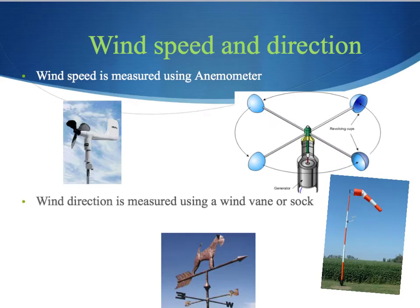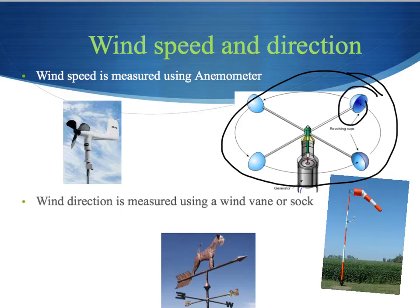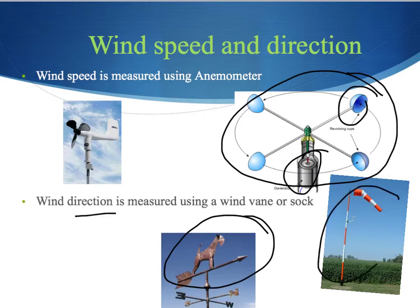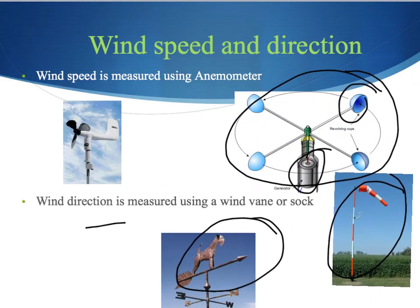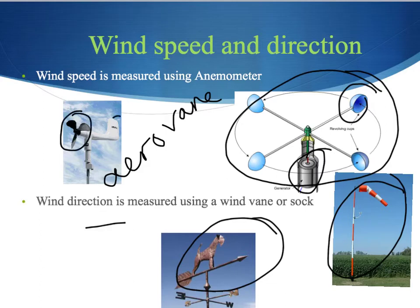Wind speed is measured using an anemometer, which counts the number of revolutions the cups make around a circle to tell you how fast the wind is going. Wind direction is measured using either a wind vane or a wind sock — you typically see wind socks at the airport. There's also an aero vane, which measures wind speed with a propeller and wind direction at the same time.